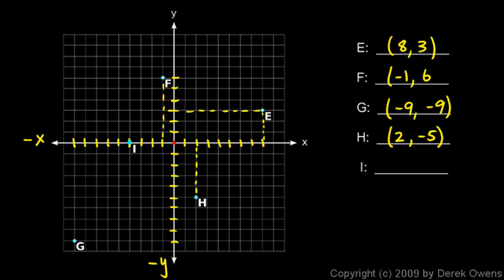Point I: from the origin we move 1, 2, 3, 4 to the left, so the x coordinate is negative 4. That point is right on the x-axis — we don't go up or down at all — so the y coordinate is 0. Point I is (-4, 0).